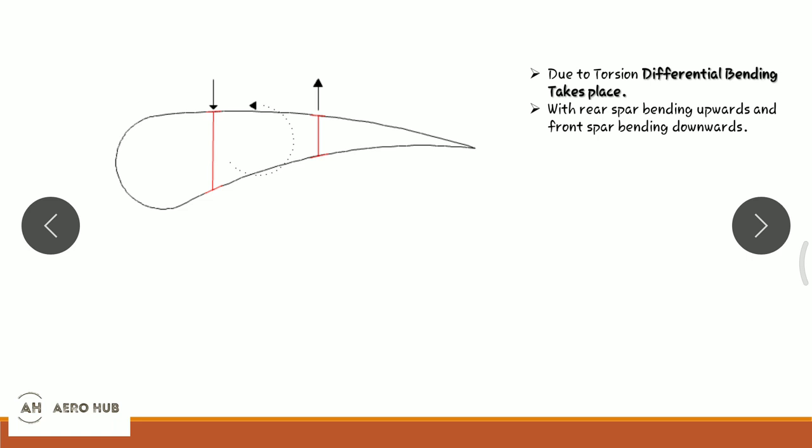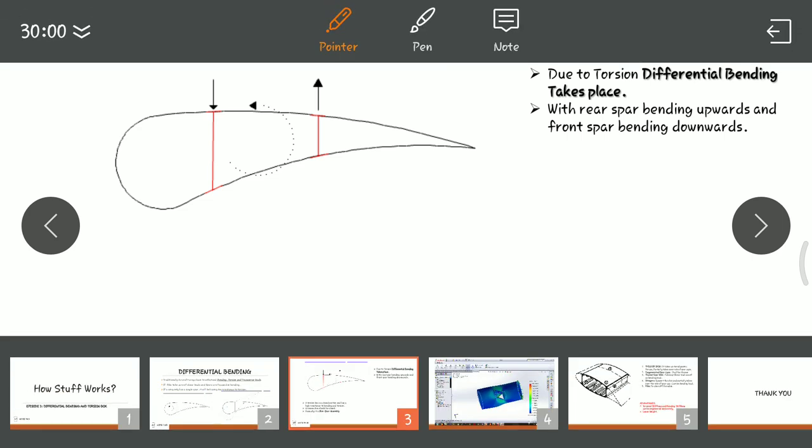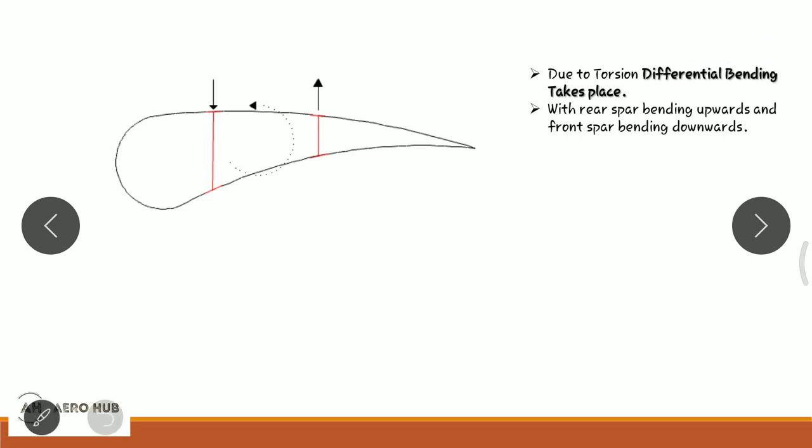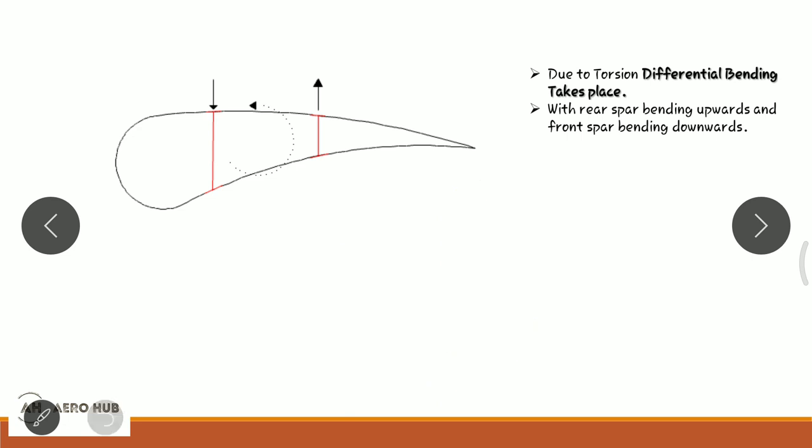For this reason we need to use something called a torsion box, which can effectively withstand both the torque load and the bending load. The most efficient section for bending is always a high section because it has a high section modulus, and the most efficient section for torque is a circular section.